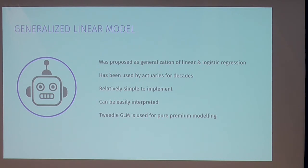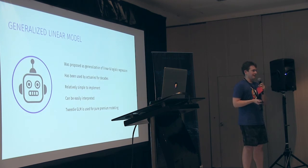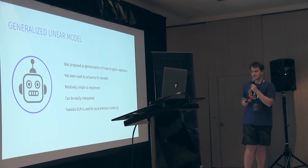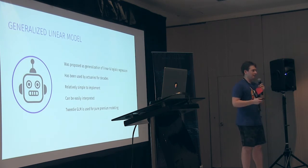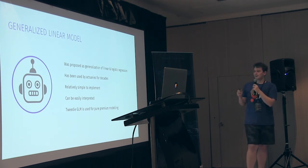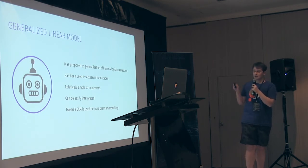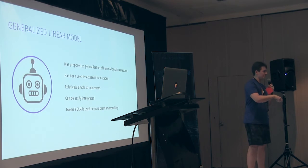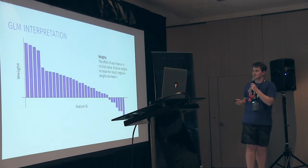The Generalized Linear Model was proposed as a generalization of linear and logistic regression — terms from basic statistics courses. It has been used by actuaries for decades as the primary tool in analysis, and it is relatively simple to implement by hand. If you train this model, you can easily deploy it and run it inside a smart contract — it's basically one formula, a single line with some basic matrix multiplication. It can also be easily interpreted, and in this scenario we are using the Tweedie Generalized Linear Model, which you can look up after the talk.